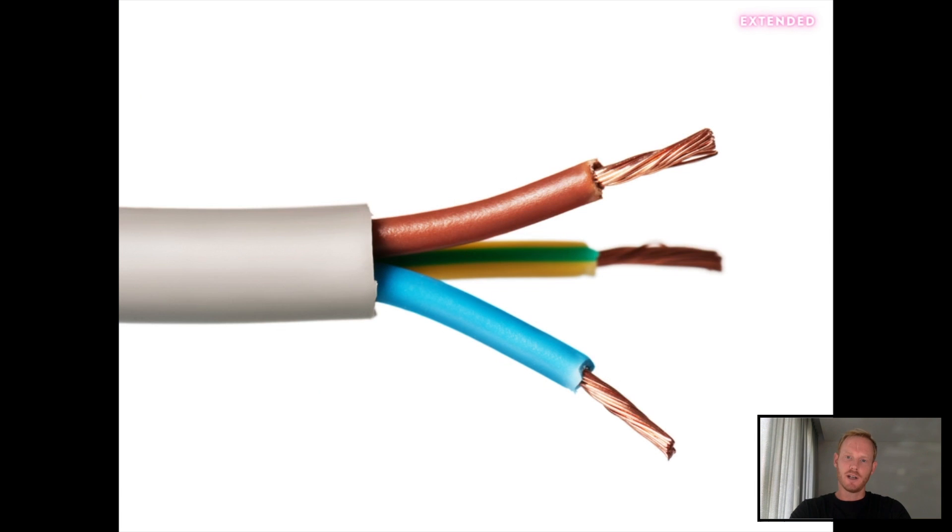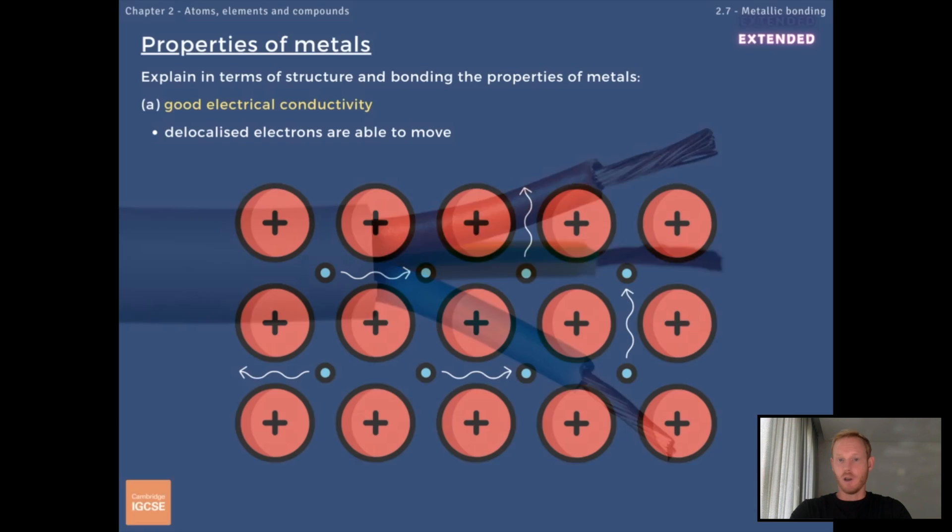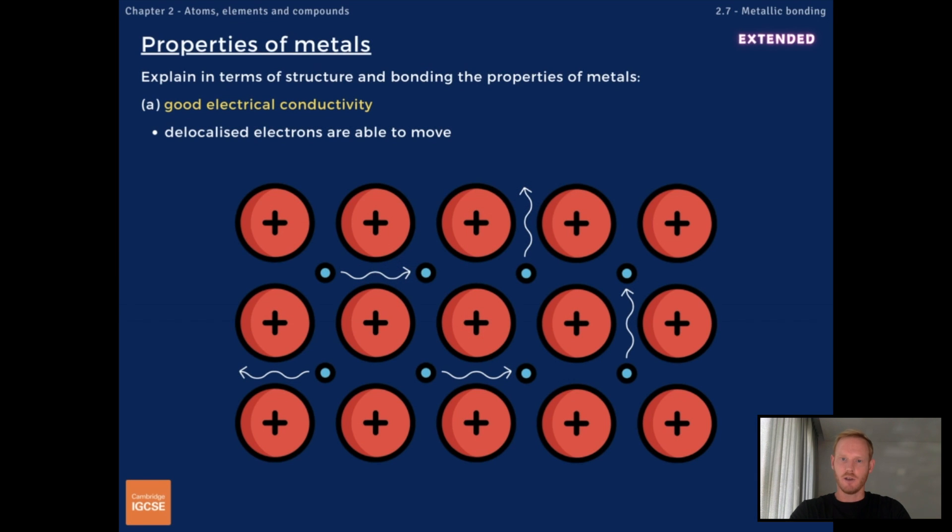Now the unique structure and bonding of metals gives metals a unique set of properties. Firstly, metals are good conductors of electricity because delocalized electrons are mobile.